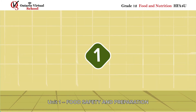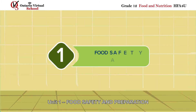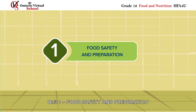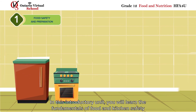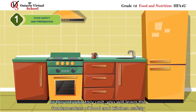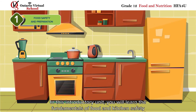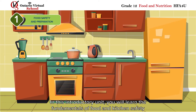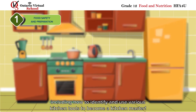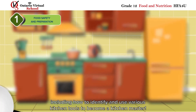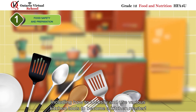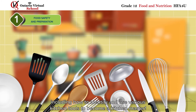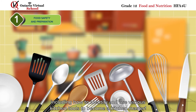Unit 1 – Food Safety and Preparation. In this introductory unit, you will learn the fundamentals of food and kitchen safety, including how to identify and use various kitchen tools to become a kitchen master.